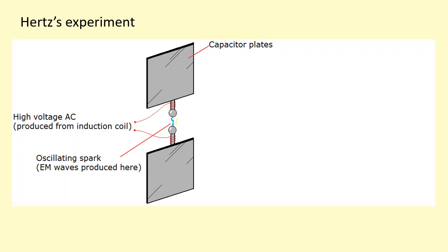When Hertz applied a high voltage AC current across this gap, sparks were produced. These sparks were also producing electromagnetic waves. In this case they were producing radio waves.